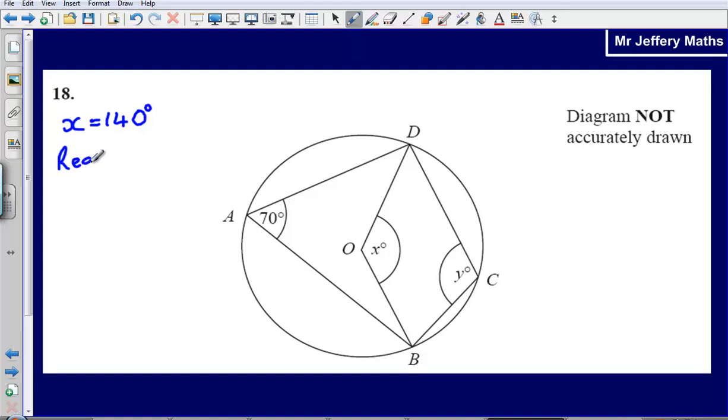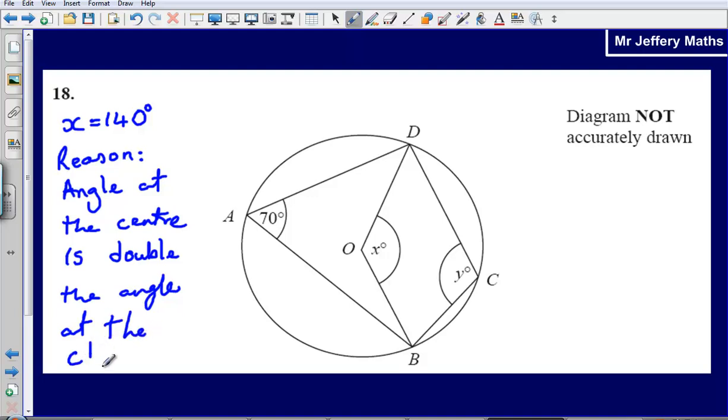Now we're also asked to give a reason here, and our reason is quite simply this: the angle at the centre is double the angle at the circumference. So the angle at the circumference here is 70 degrees. The angle at the middle then must be double 70, which is 140. So we would write down that the angle at the centre is double the angle at the circumference. So that would be our reasoning there.